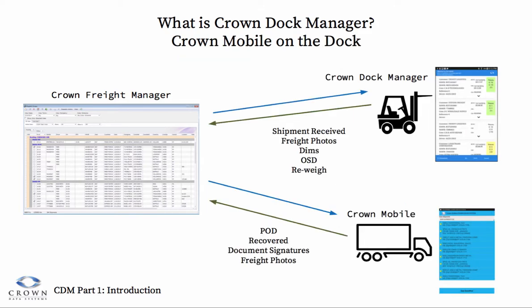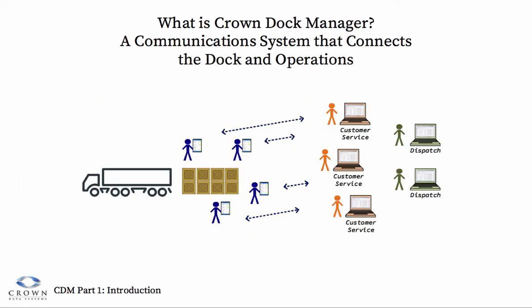So here we see the parallel. Raw shipment information is sent out from Freight Manager, and a dock worker will use Dock Manager to send back updated shipment information from the dock, in the same way that a driver will use Crown Mobile to send back updates from the road. Another way to think about Crown Dock Manager is to see it as part of a communications system that links the operations and customer service staff with the dock staff.